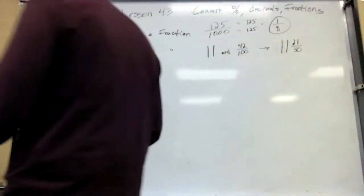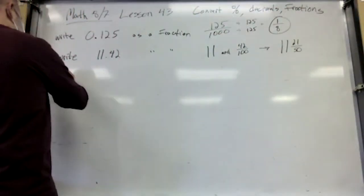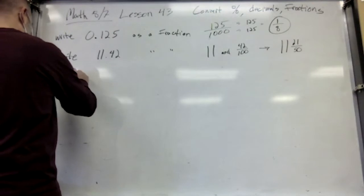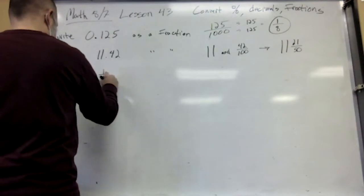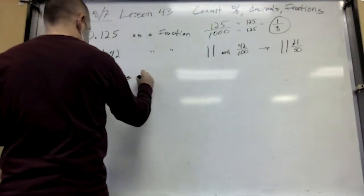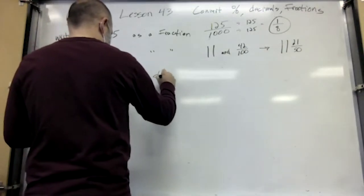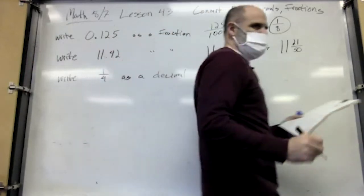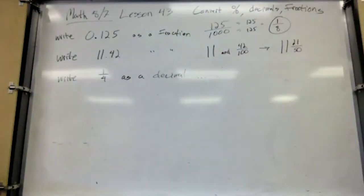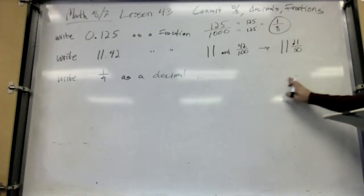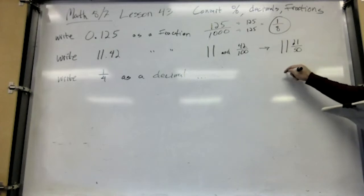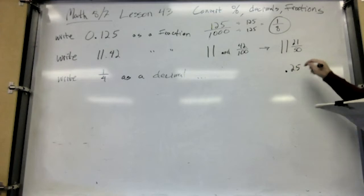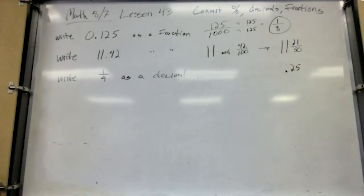Next, let's write a fraction as a decimal. How do you write one-fourth as a decimal? You probably already know this — 0.25. But how do you do it if you don't have it memorized? How do you figure out what a fraction is as a decimal?